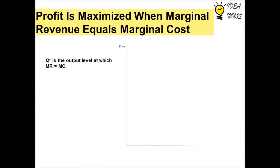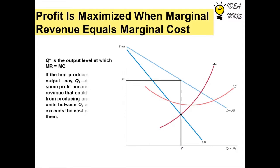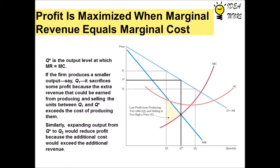A monopolist decides how much to produce: q* is the output level at which MR equals MC. If the firm produces a smaller output q1, it sacrifices some profit because the extra revenue that could be earned from producing and selling the units between q1 and q* exceeds the cost of producing them.